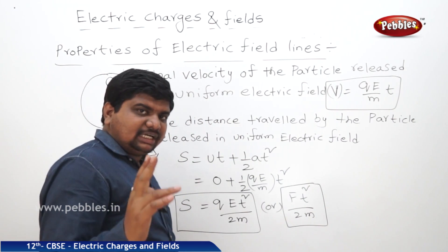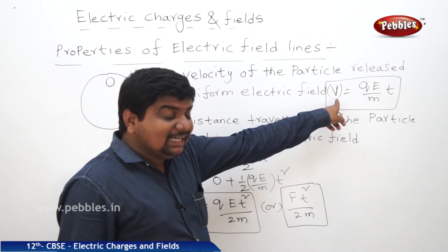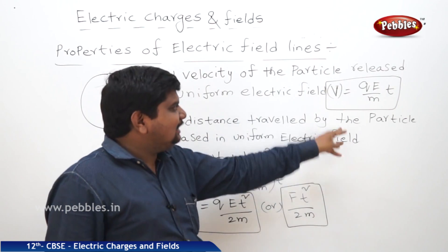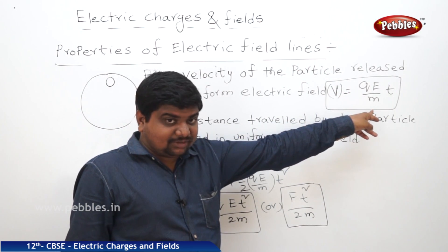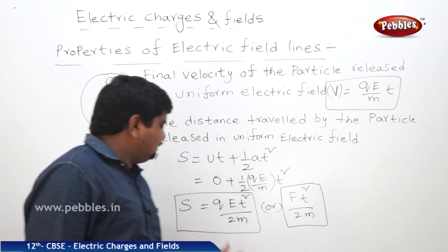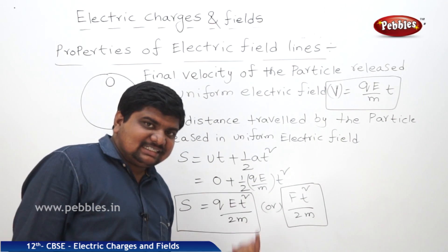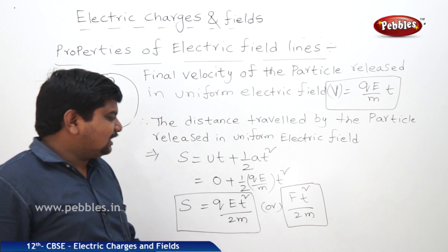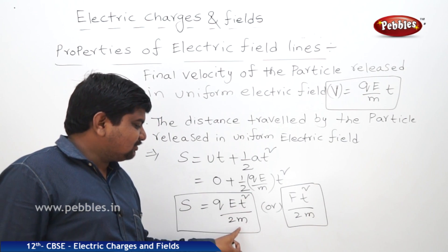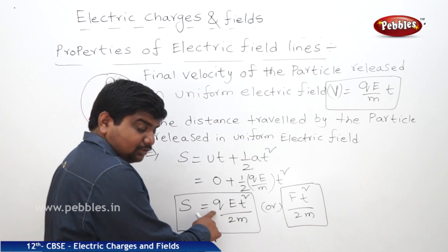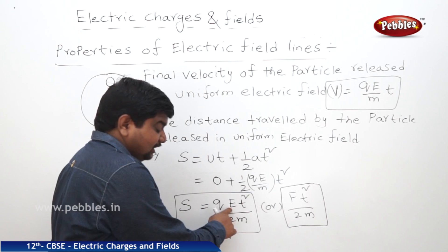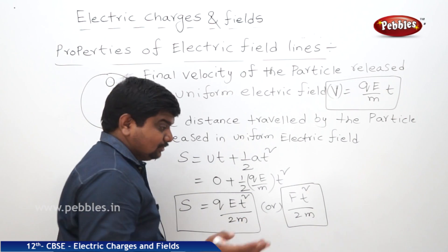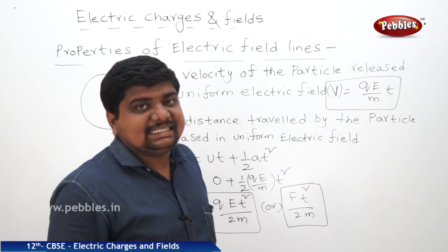So we have two relations. First, the final velocity attained by the particle released in a uniform electric field is QE by M into T. Second, the maximum distance a particle can travel in the uniform electric field is QE t squared by 2M, where Q is charge, E is electric field intensity, T is time, and M is mass of the particle.